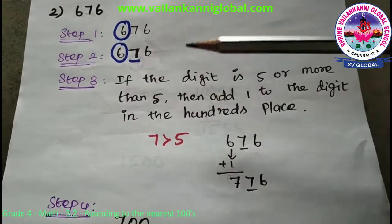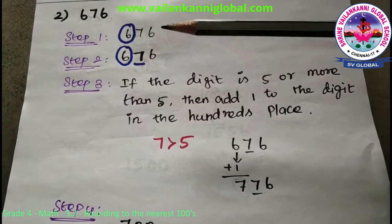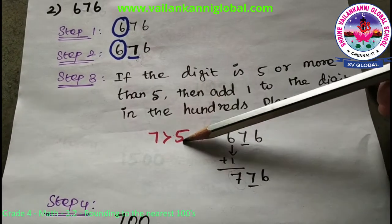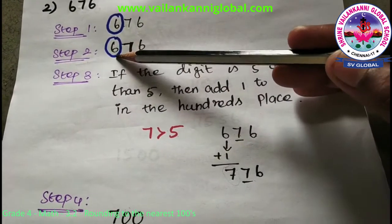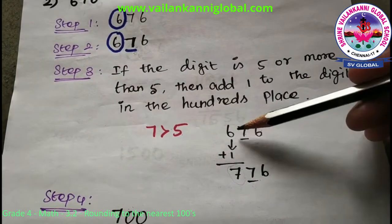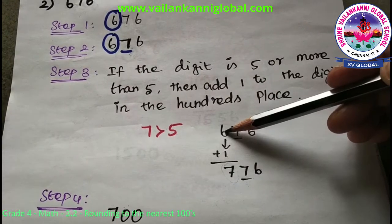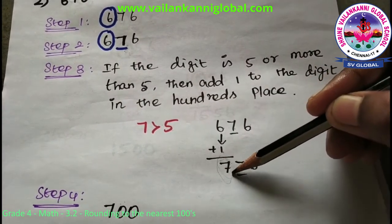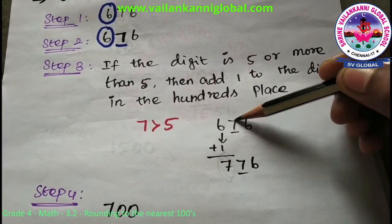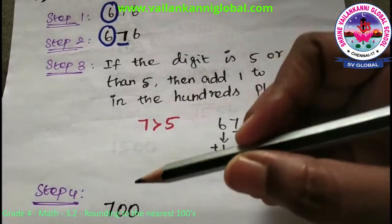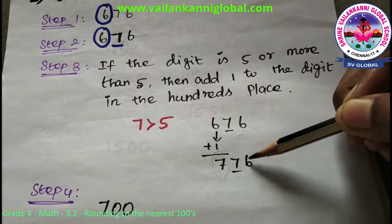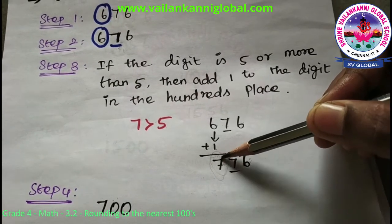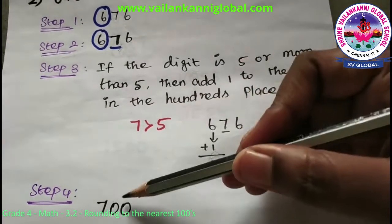Step 3 is to check whether the underlined value is more than 5 or less than 5. Definitely 7 is more than 5, so add 1 to the hundreds place. In 676, the hundreds place is 6. Adding 1 gives 7, so the hundreds place changes to 7. Step 4 — change all digits to the right of the hundreds place to 0. So the answer is 700.